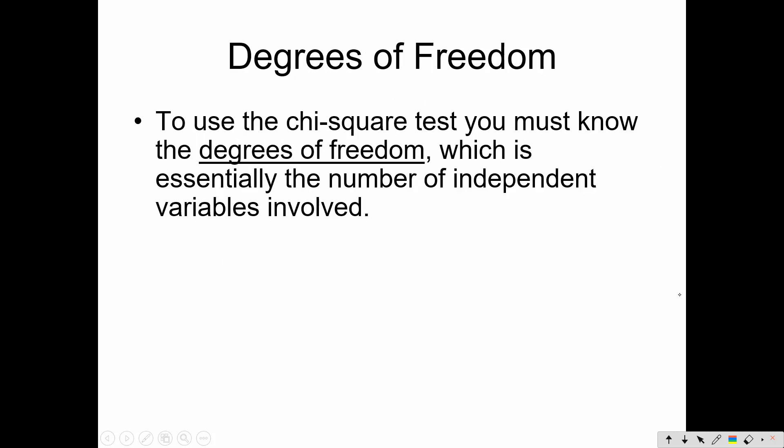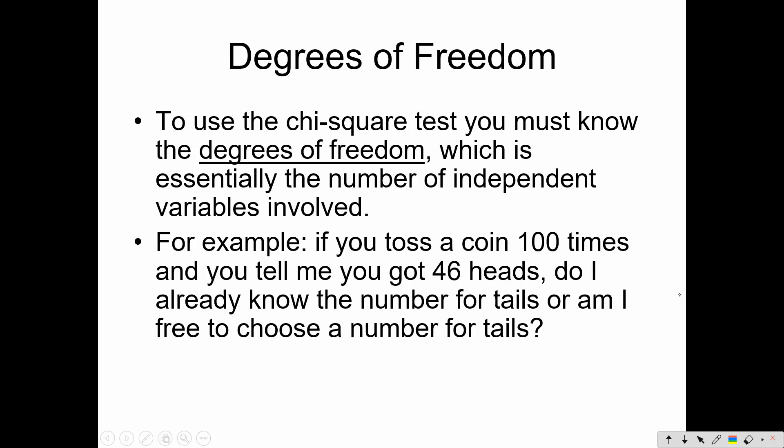Now, to use the chi-square test, you have to know how many degrees of freedom. What that really means, it's essentially the number of independent variables that are involved. For example, if you toss a coin a hundred times, and you tell me you got 46 heads, do I already know the number of tails you got, or am I free to choose a number for the tails? That determines your degrees of freedom. With a coin toss, since there's only two possible conditions, if you tell me one, I know the other one automatically. So you really only have one degree of freedom. You're free to tell me the first condition. Once you tell me that, I know the second.